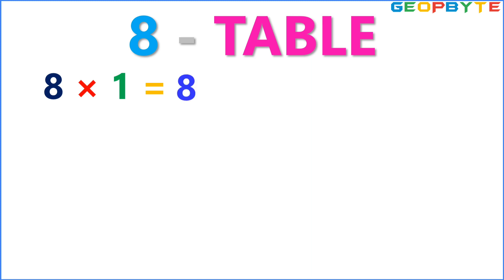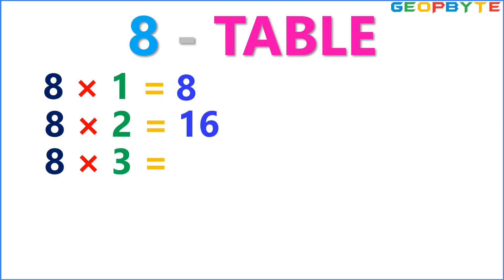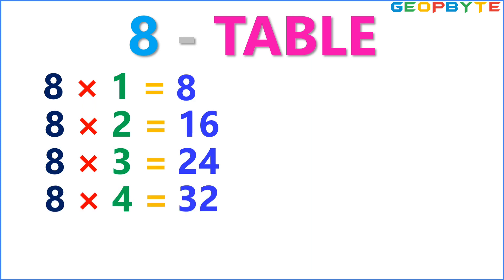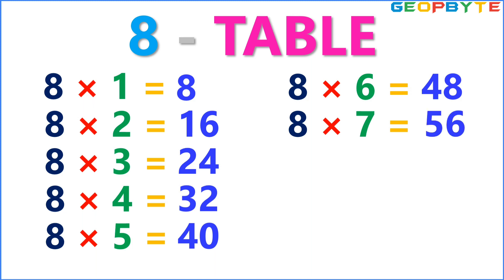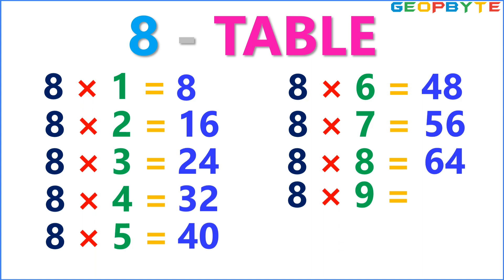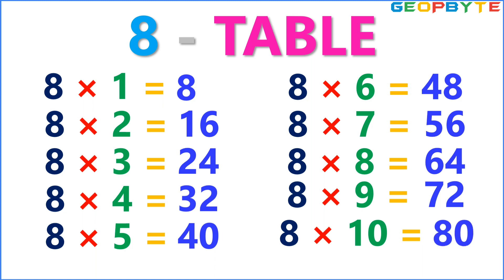Now let us see the 8 table. 8 1s are 8. 8 2s are 16. 8 3s are 24. 8 4s are 32. 8 5s are 40. 8 6s are 48. 8 7s are 56. 8 8s are 64. 8 9s are 72. 8 10s are 80.